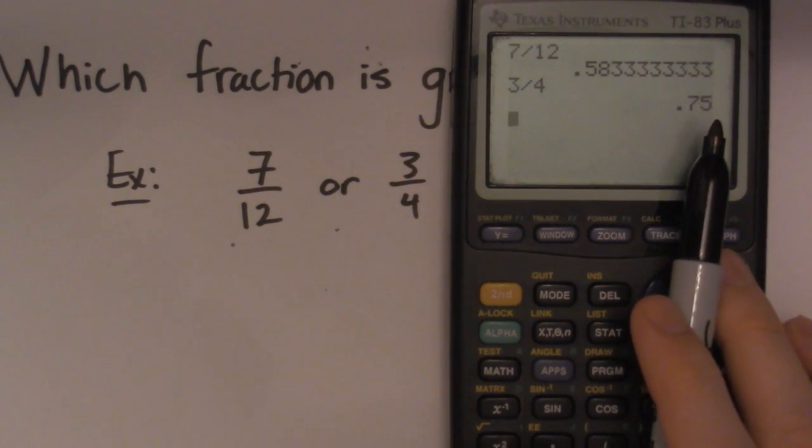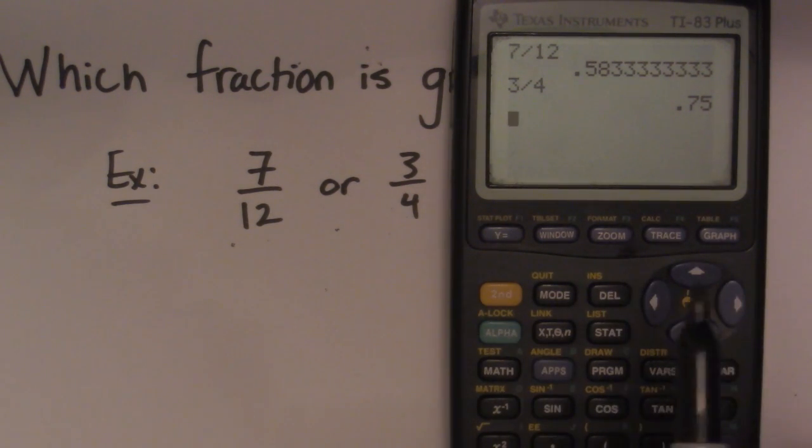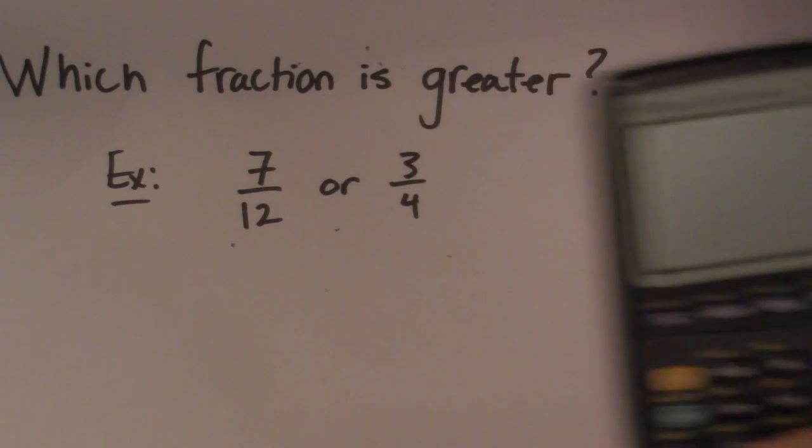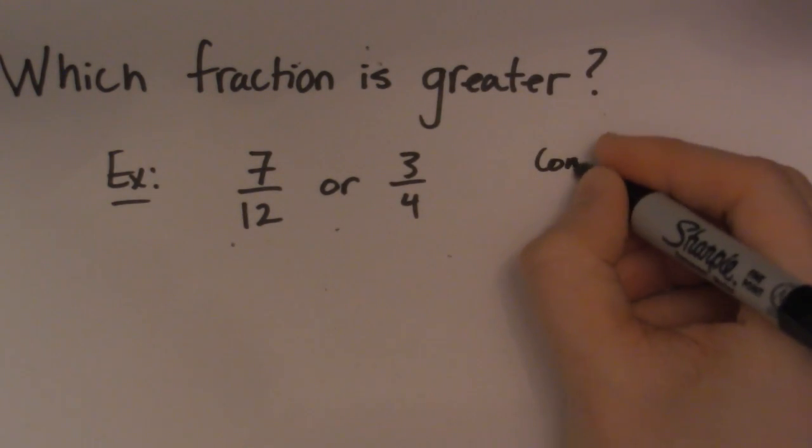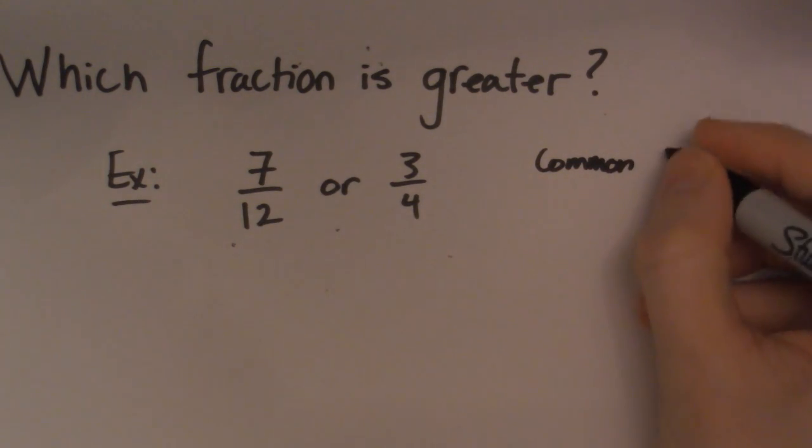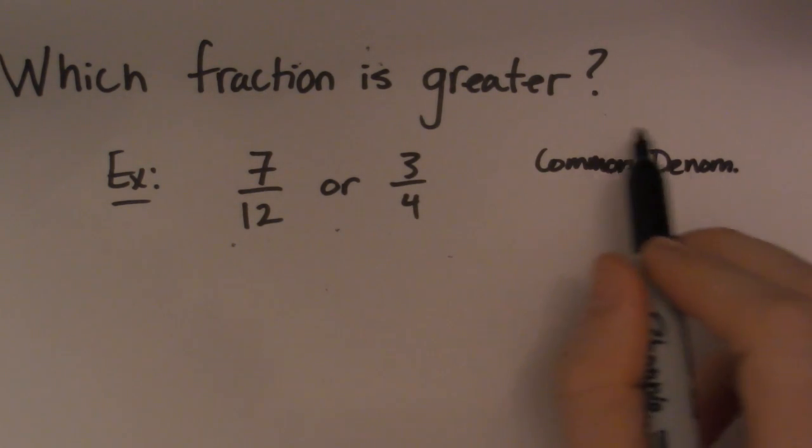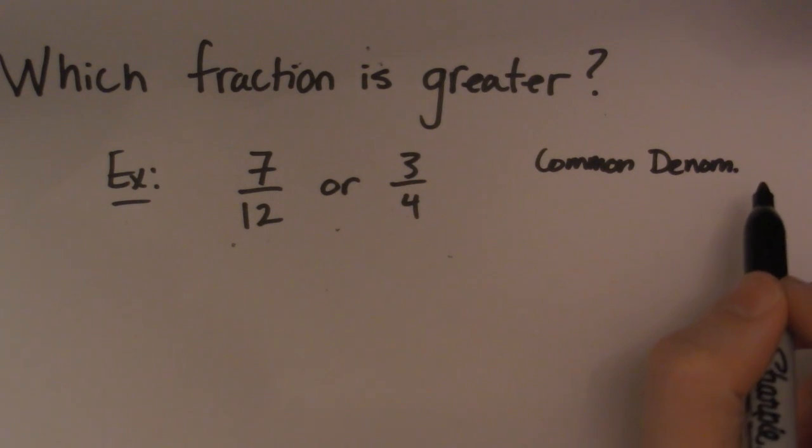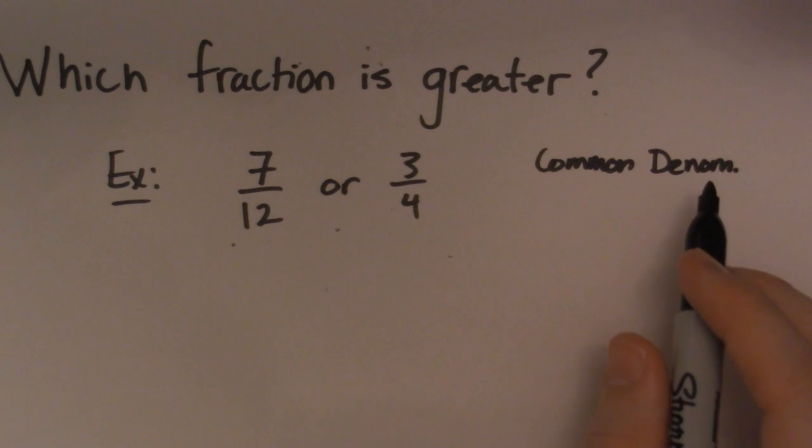Now there's a pretty high probability that your teacher is not going to let you use a calculator if you have such a thing on a test. So then what you have to think about doing is finding a common denominator. So there's a couple different ways we can do this. And again, for a question like this, it doesn't necessarily have to be the lowest common denominator.